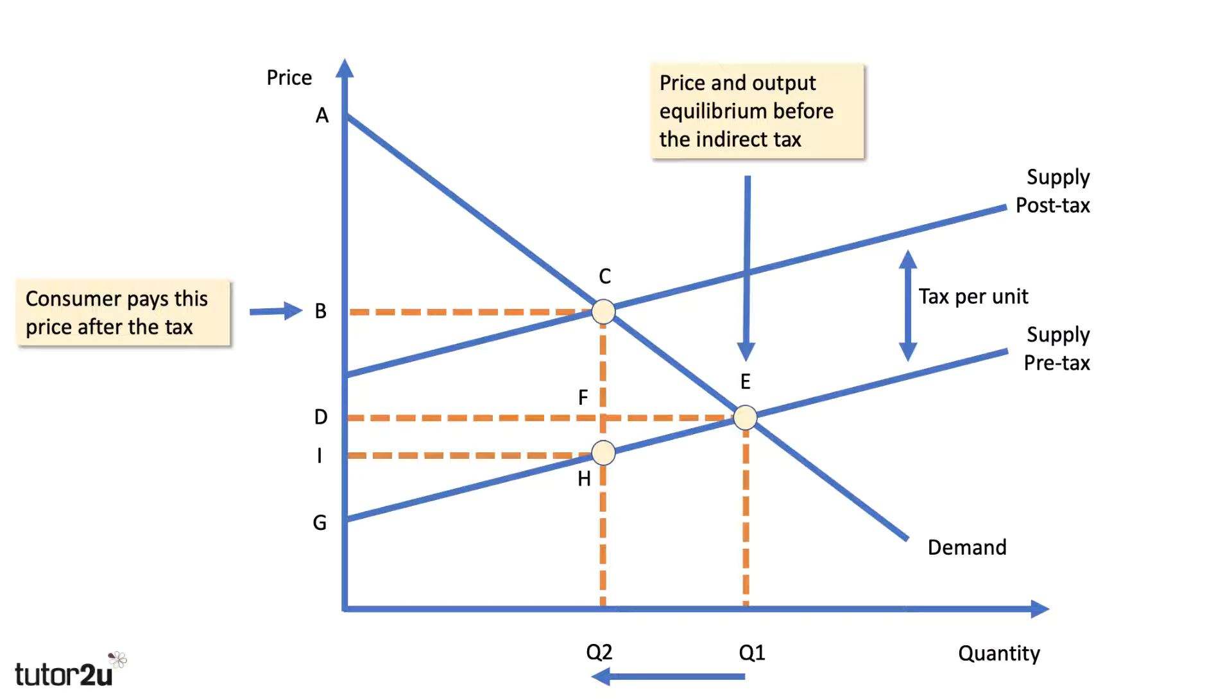But that's not the price the producer keeps because, of course, there's a tax to pay. The tax per unit is the vertical distance between the two supply curves. So we have to take off the tax to show the price the producer gets. Can you work out what that's going to be? It's going to be price I. So B I is that vertical distance, is the tax per unit. The consumer pays B, the producer keeps price I after the tax.